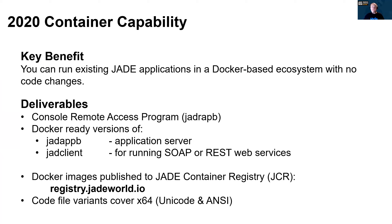What are the main deliverables in 2020? The main benefit is you can run existing applications in a Docker-based ecosystem with no code changes. In earlier releases, you could run a database server node as a GUI application using jadwrap.exe or as a Windows service using jadserv.exe. 2020 provides an additional jadwrapb.exe executable — the B historically stands for batch — equivalent to things like jdbutilb or jadappb. This enables you to run a database server node as a console application, with the main use case being to provide a Docker container-ready entry point process.